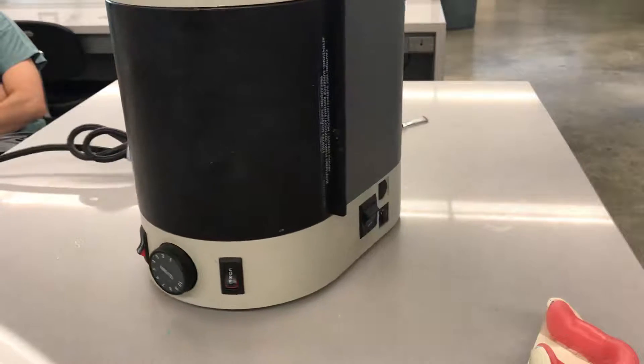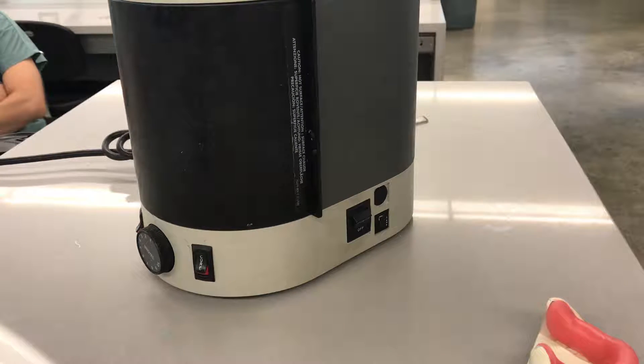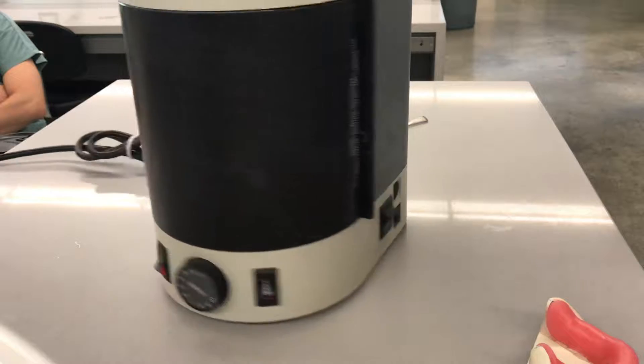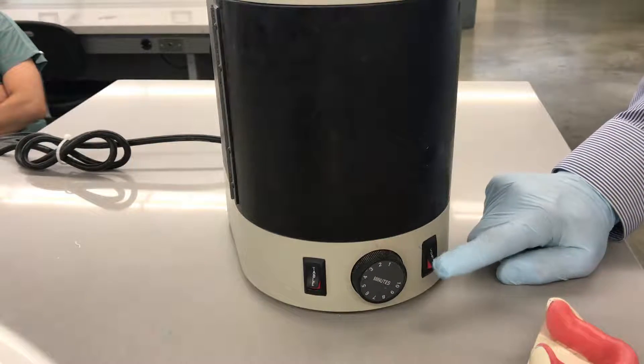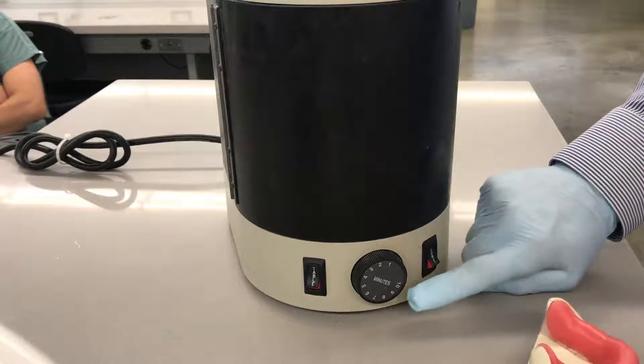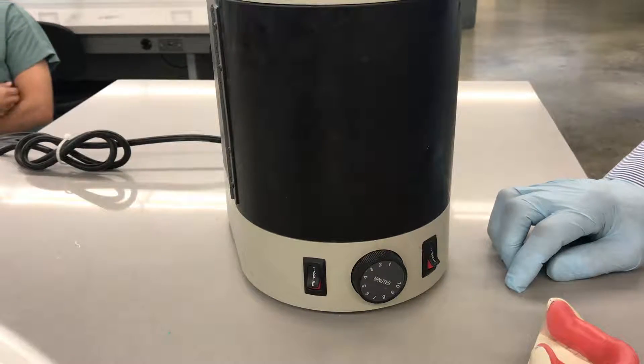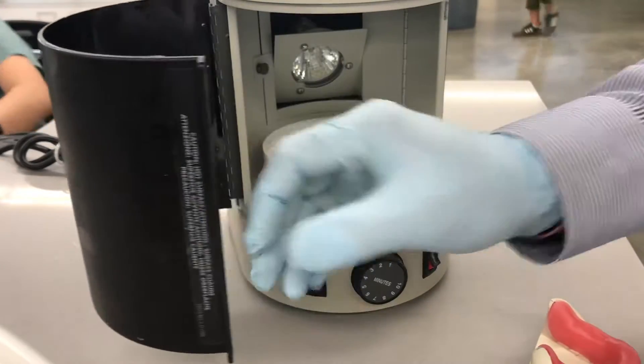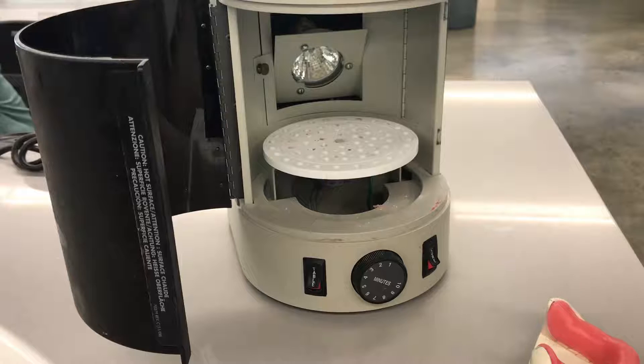You have an on and off button here on the side, as well as one for the light source and one for the turning table. When you open the door, you'll see a table here that is adjustable.